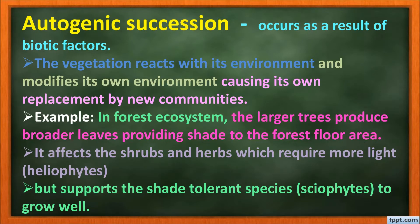Autogenic succession occurs as a result of biotic factors — vegetation reacts with the environment and modifies its own environment, causing its replacement by new communities. For example, in a forest ecosystem, large trees produce broader leaves providing shade for the forest floor, affecting shrubs and herbs that require more sunlight — called heliophytes. So small shrubs and herbs are replaced by large trees, which supports shade-tolerant plants called sciophytes. Heliophytes are replaced by sciophytes in autogenic succession.